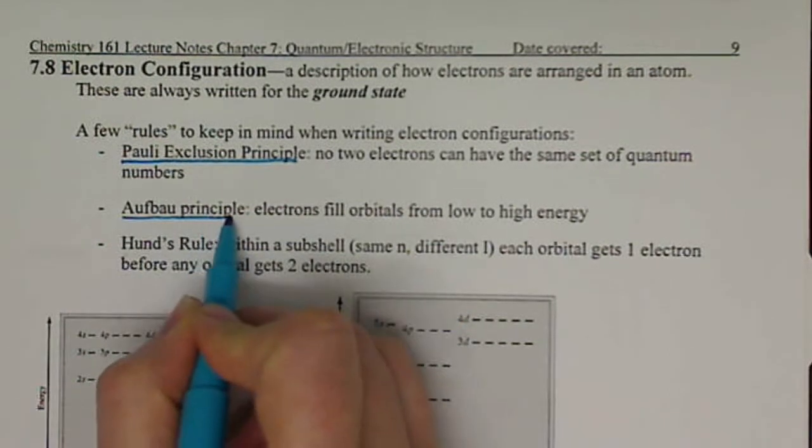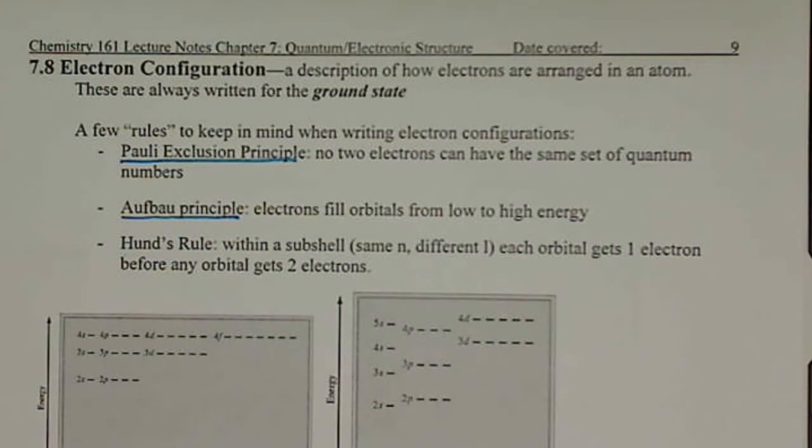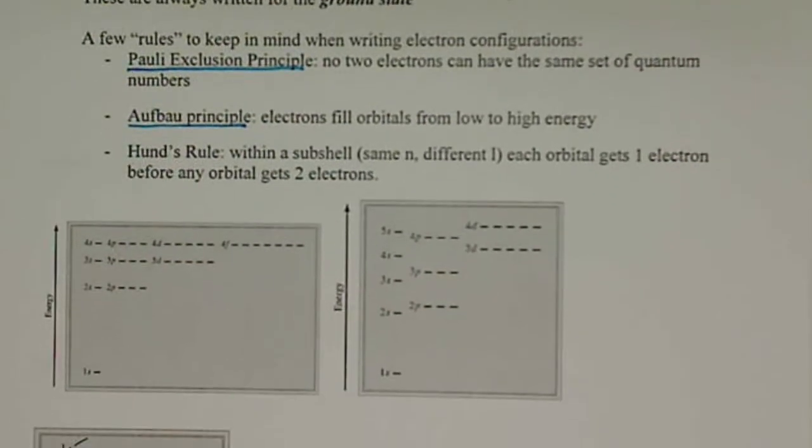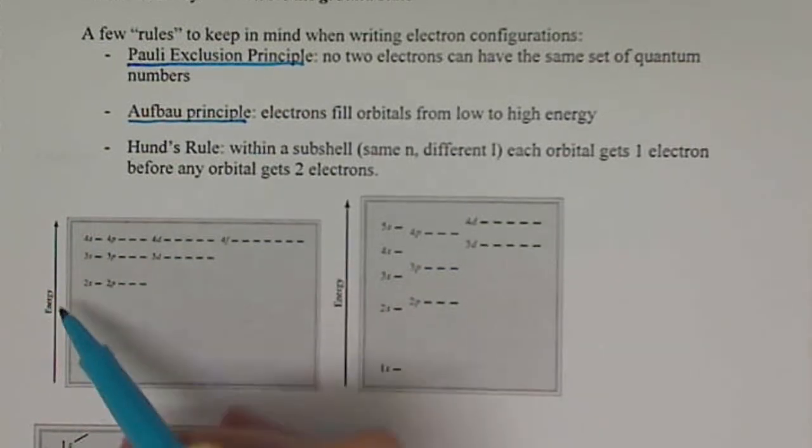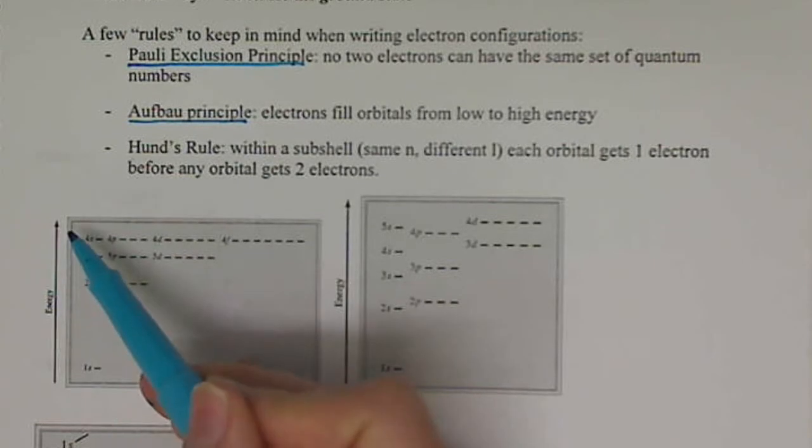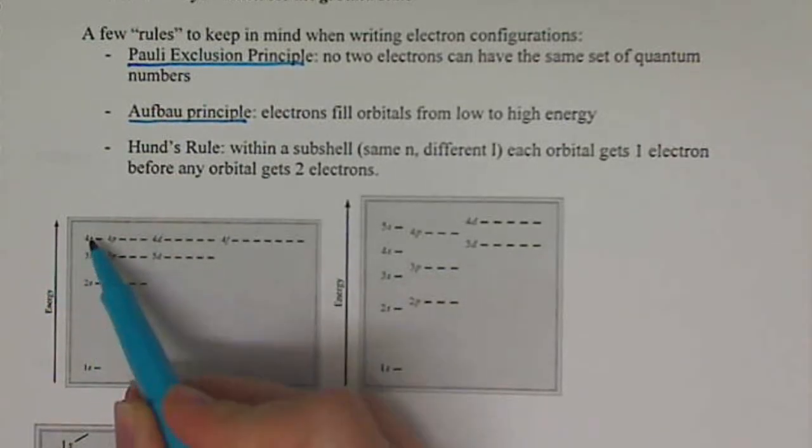The Aufbau principle says that electrons are going to fill the orbitals from low energy to high energy. So essentially what that means is we're going to fill, we're going to assign electrons to an atom, and we're going to fill them from closest to the nucleus to further out. So our energy, as we increase our energy, our n level is going to increase.